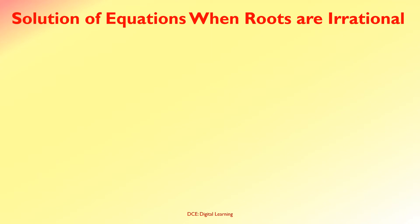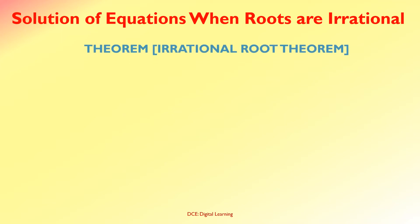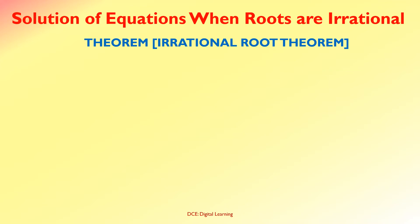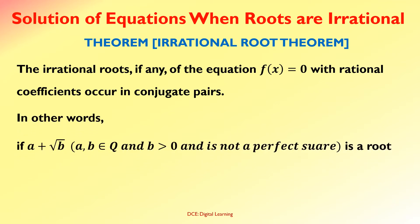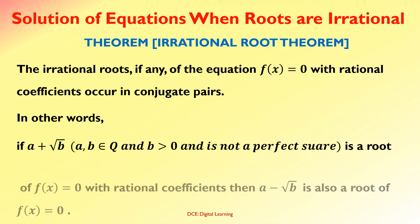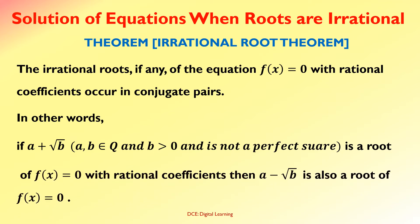Solution of equations when roots are irrational numbers. We are going to discuss a theorem known as the irrational root theorem. Statement: the irrational roots, if any, of the equation f(x)=0 with rational coefficients occur in conjugate pairs. In other words, if A+√B, where A, B are rational numbers and B is positive and not a perfect square, is a root of f(x)=0 with rational coefficients, then A−√B is also a root of f(x)=0.